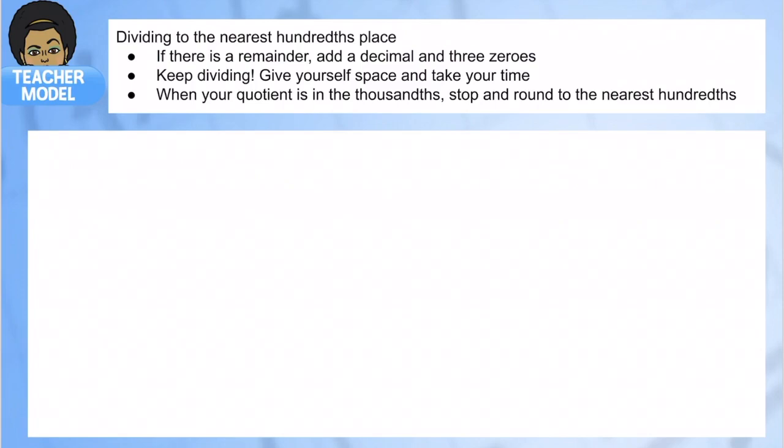If you see there's a remainder, you're going to see me add a decimal and three zeros. If there's not a decimal there, we're going to add one and add three zeros. If there is a decimal there, we're going to have enough digits that go to the thousandths. So three zeros to the thousandths.